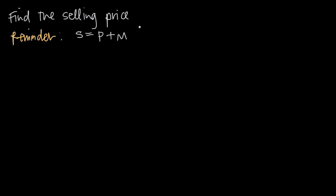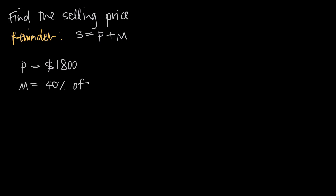When it comes to markups and selling price, you just need to remember this formula. Selling price — the amount that the business sells you the item for — is going to be equal to purchase price, the amount that they purchased it for, plus a markup. In this example, the purchase price is equal to eighteen hundred dollars and the markup is equal to forty percent of the selling price.